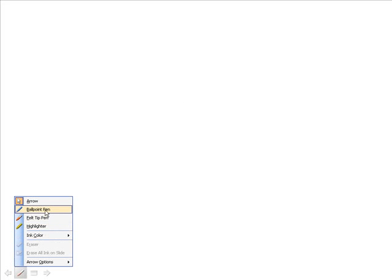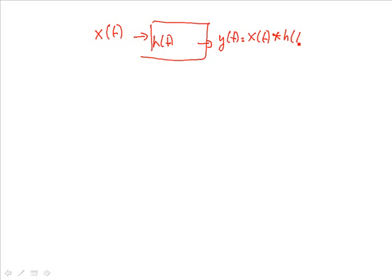So we'll start off with the relationship between an input and an output. Here, we've got x(t) feeding into the system h(t), and we get our output y(t), which is the relationship between the input and the system response.